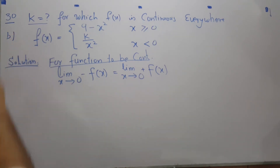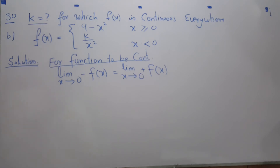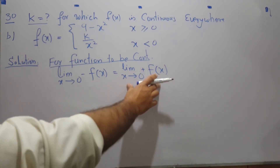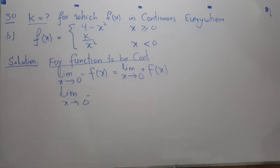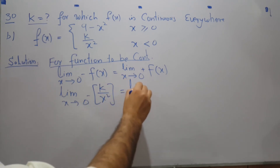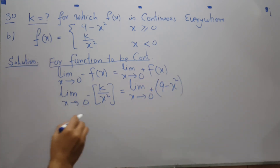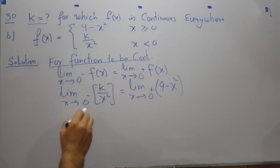In part B, the same question has the domain changed to x greater than or equal to 0 and x less than 0. For a function to be continuous, the left hand limit and right hand limit must exist and be equal. Here the left hand limit evaluates to 1 over 0, which is undefined, so the left hand limit does not exist.